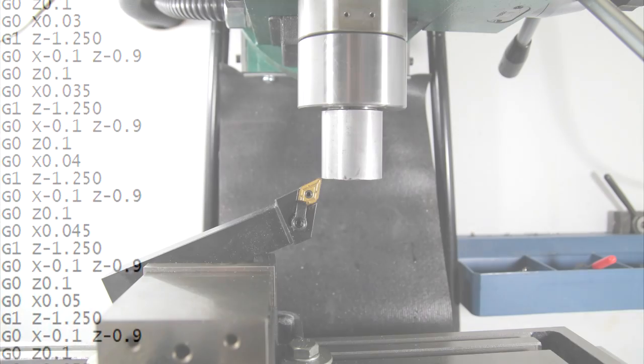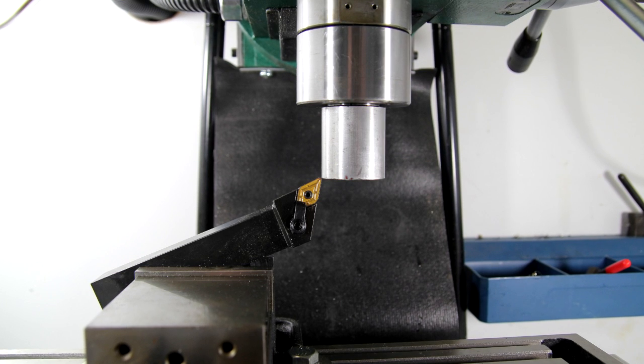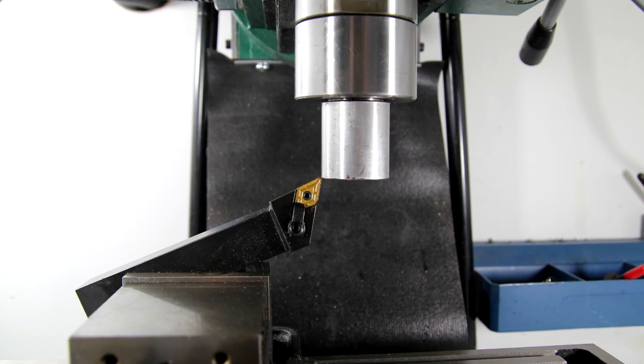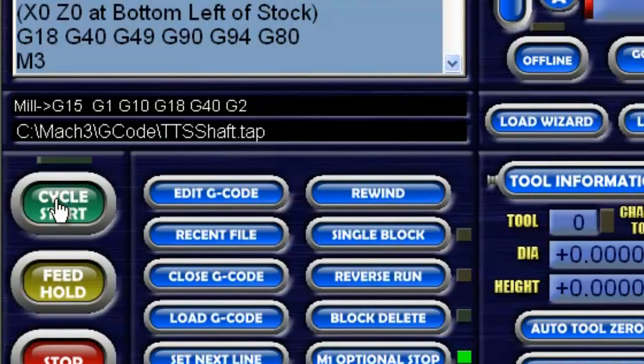So we have the blank mounted in the chuck, the cutting tool is aligned and positioned to the initial coordinates needed by the CNC program, and the g-code is loaded into Mach 3. All we have to do now is push cycle start and sit back and watch the show.